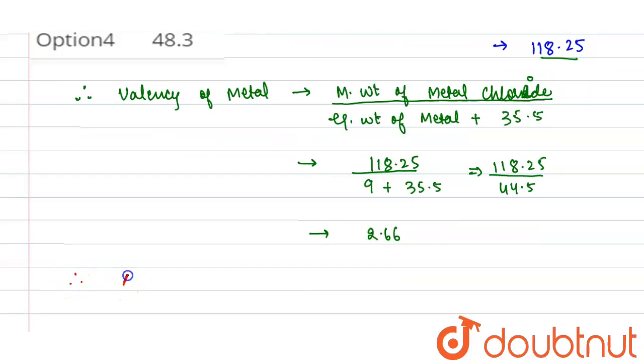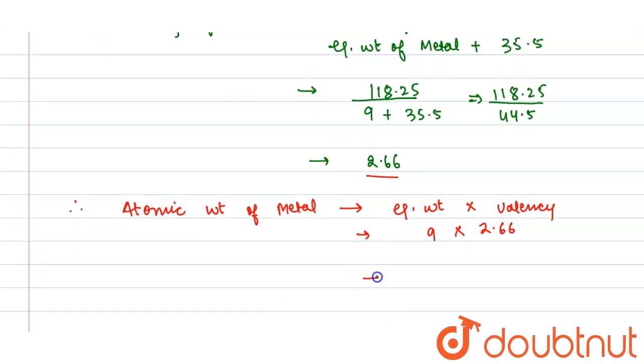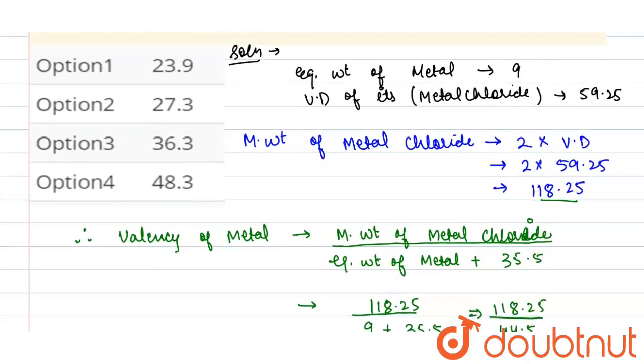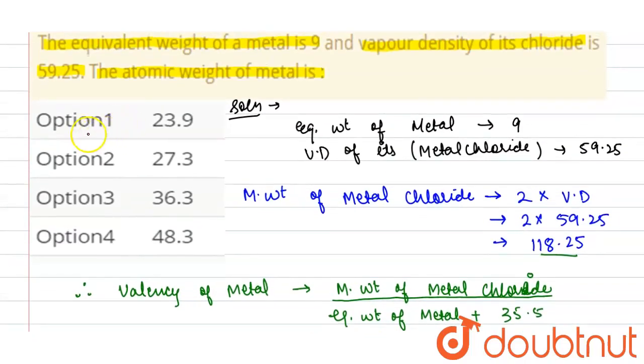Now we can calculate atomic weight of metal. As atomic weight of metal is equal to equivalent weight multiplied by valency, so equivalent weight is given that is 9 multiplied by valency, that is 2.66, so it will be 23.9. So from the given option, option 1 is correct.